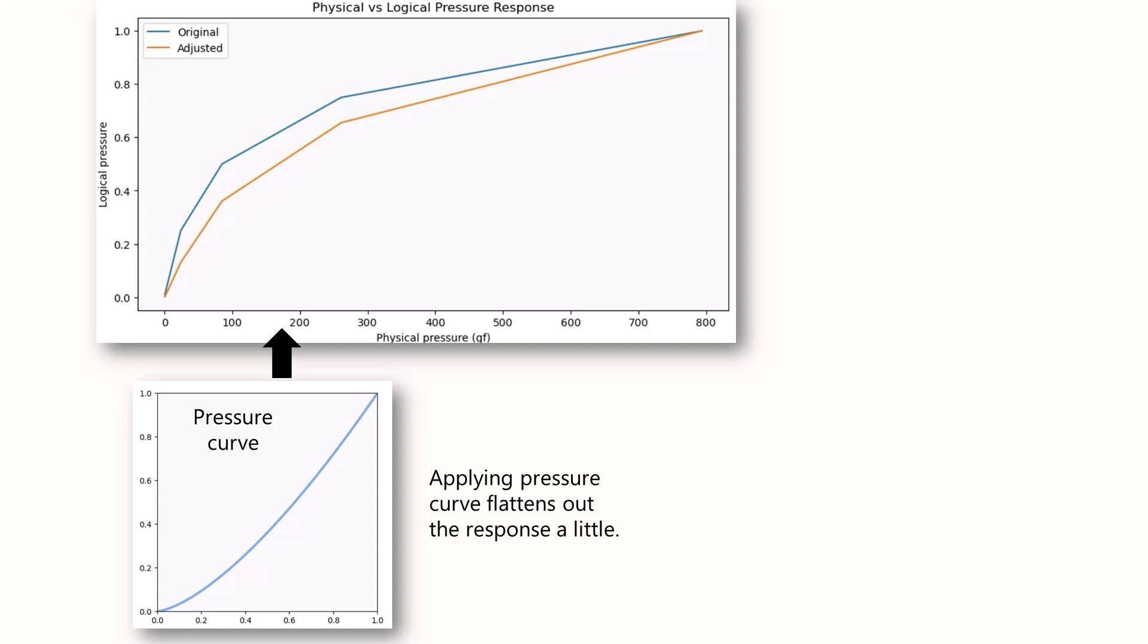We'll say pressure curve transforms the logical pressure and it can kind of reshape it. At the bottom is a pressure curve and it's kind of bowed down a little bit. At the top, you can see how that pressure curve affects the pressure response of the pen. The blue line is the original pressure response curve, and the orange line is the response accounting for the pressure curve.